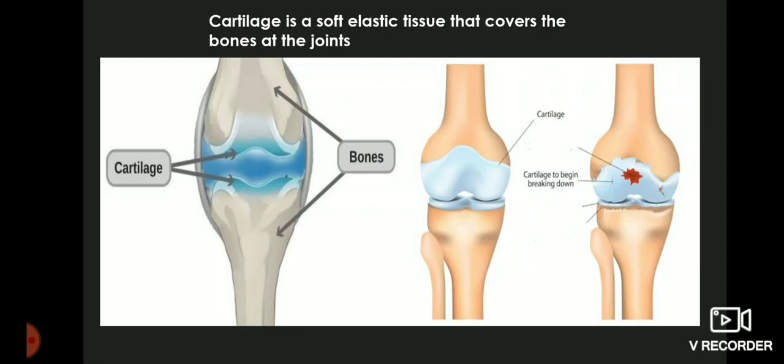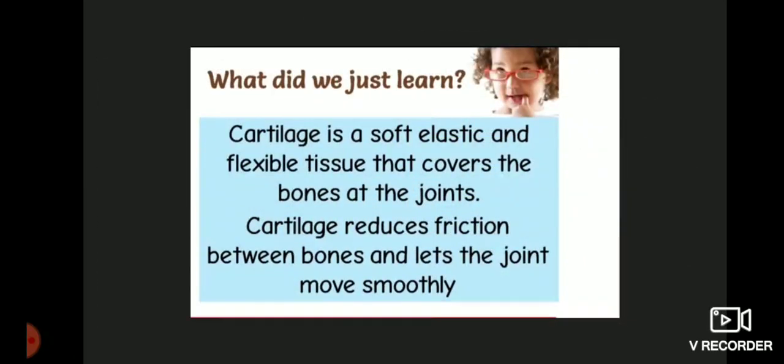Cartilage is a soft elastic and flexible tissue that covers the bones at the joints. It helps in the movement of our joints. Cartilage reduces friction between bones and lets the joints move smoothly.